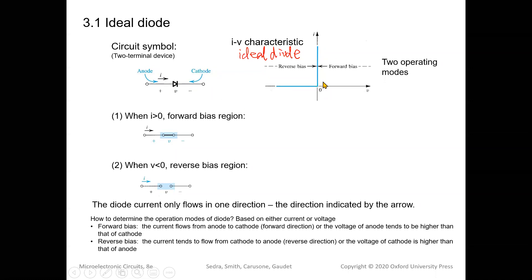We can see there are two operating modes. The ideal diode has two operation regions. The first is a vertical straight line overlapping the positive current axis. The second is a horizontal straight line overlapping the negative voltage axis. Let's discuss each mode. When current I is greater than zero, we are in the vertical line region.